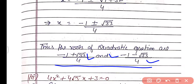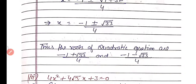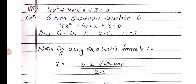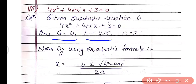You can pause the video and note it down. Now proceed for part number 3. The given quadratic equation is 4x² + 4√3·x + 3 = 0. Here the coefficient of x² is a = 4, the coefficient of x is b = 4√3, and the constant term is c = 3. By using the quadratic formula x = (−b ± √(b² − 4ac)) / 2a.